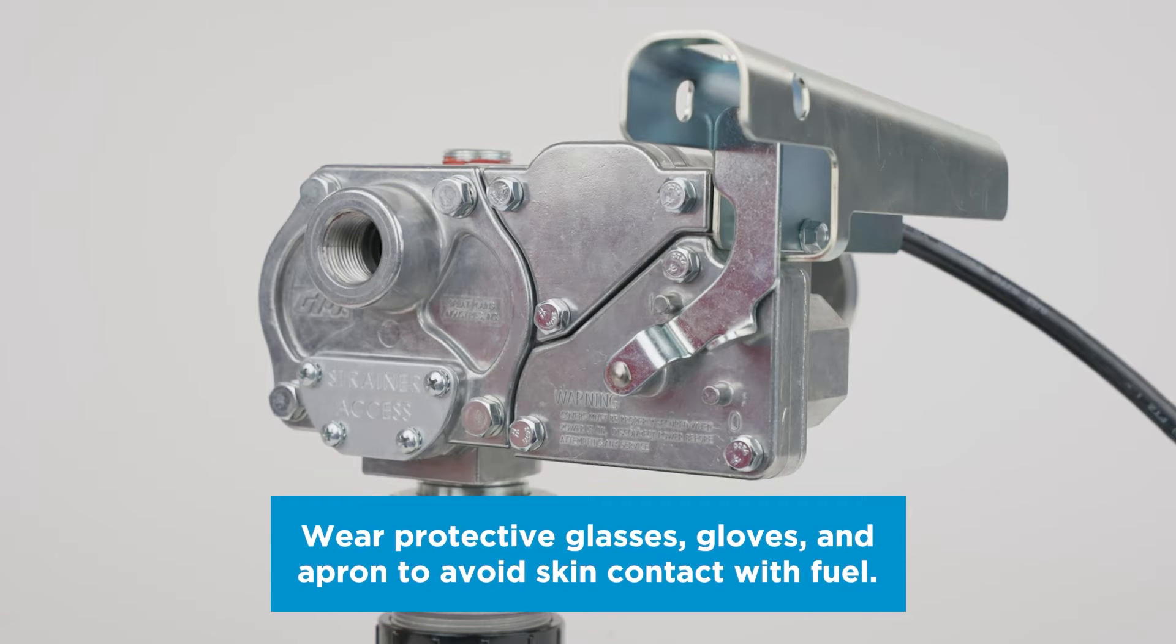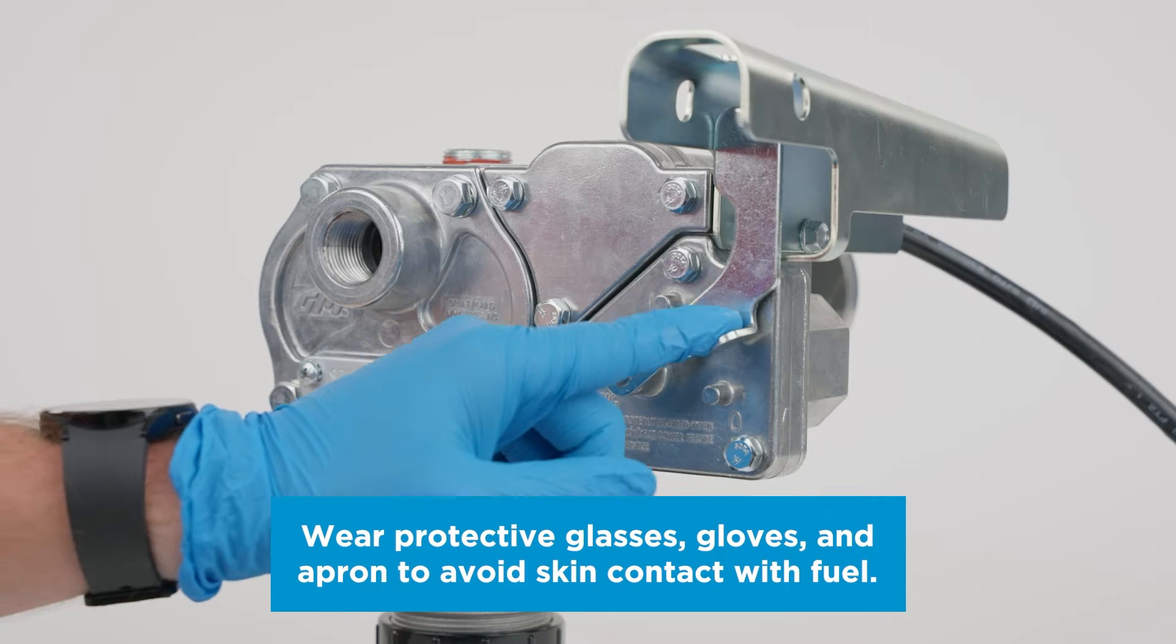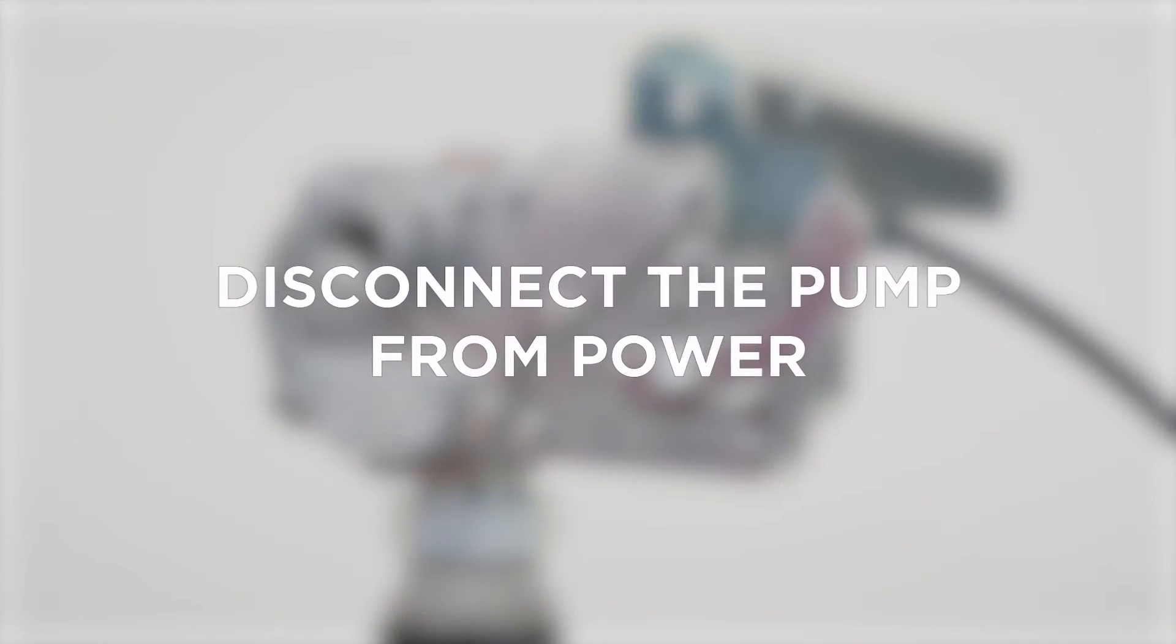To replace the motor shaft seal on your M150, turn the pump off and disconnect the pump from power.